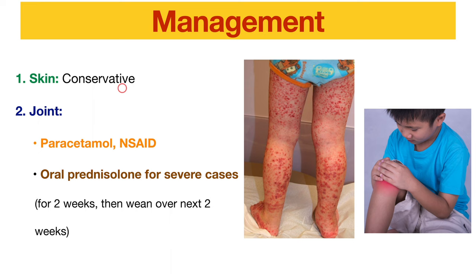For management: skin involvement — conservative management, as the rashes usually resolve within weeks, though they can recur. Counsel parents about recurrence. For joint involvement, pain control is the mainstay; we can give paracetamol, or for more severe cases NSAIDs like ibuprofen. For severe cases, oral prednisolone for two weeks, then taper over the next two weeks.